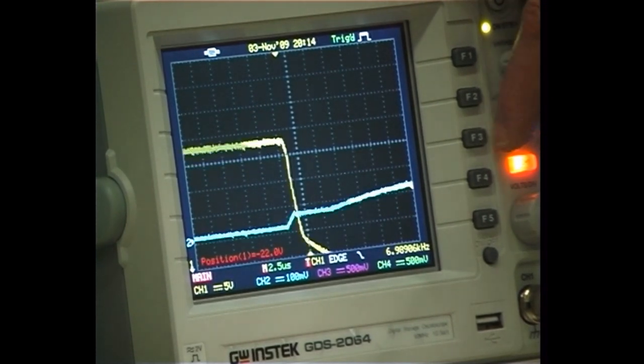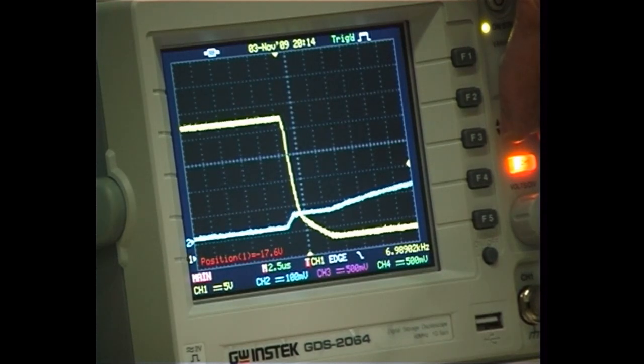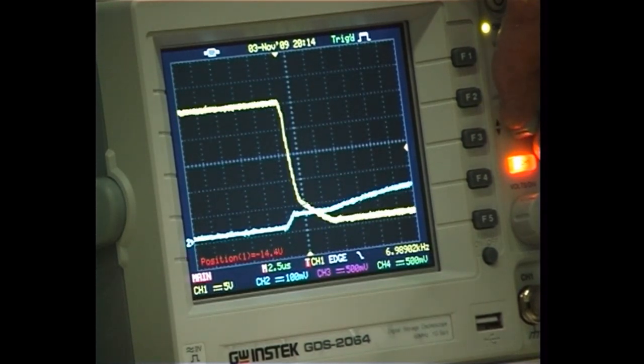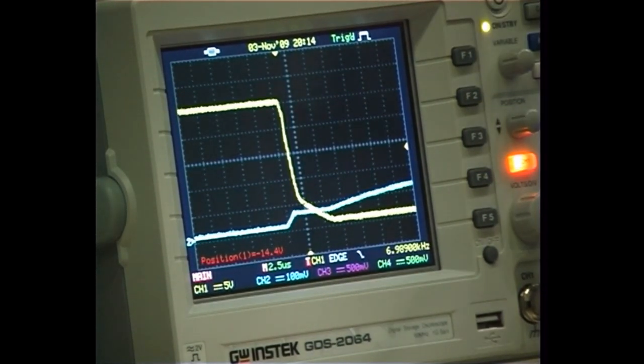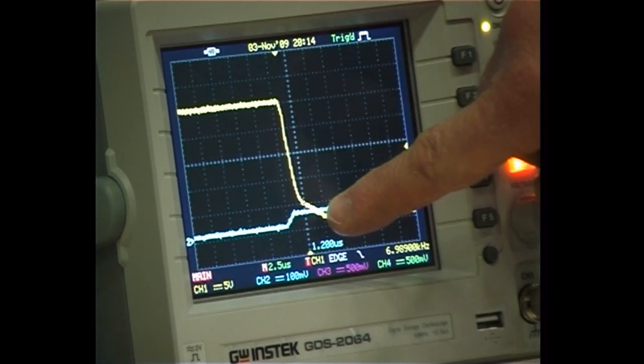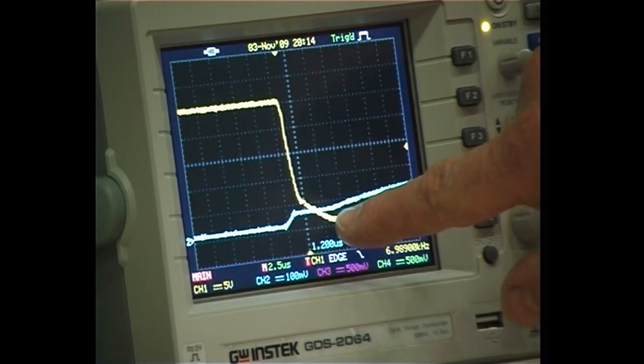But now that plateau coincides exactly with the volts on the MOSFET starting to collapse, the drain source voltage starting to collapse. Take that zero back to there. Okay. What you see here is that it's very non-linear through here, but it coincides again completely.